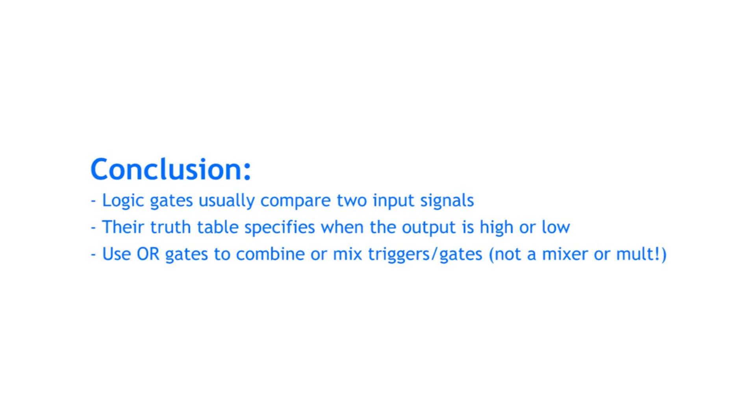Logic gates compare two input signals. A fixed internal truth table tells the module if the output signal is high or low. Use an OR gate module to combine triggers and gates, not a mixer module or multiple.